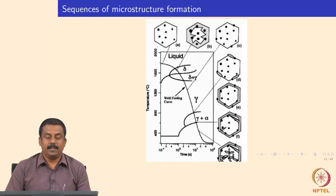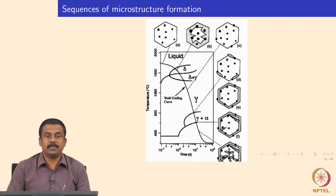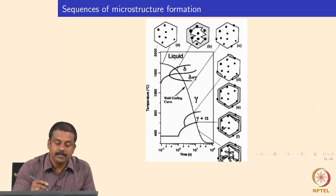We are looking at the effect of alloying elements, particularly silicon and aluminum, on the evolution of microstructures. If you look at the sequence of microstructure formation in steels, the first reaction you would expect to see, even much before solidification starts, is inclusion formation.